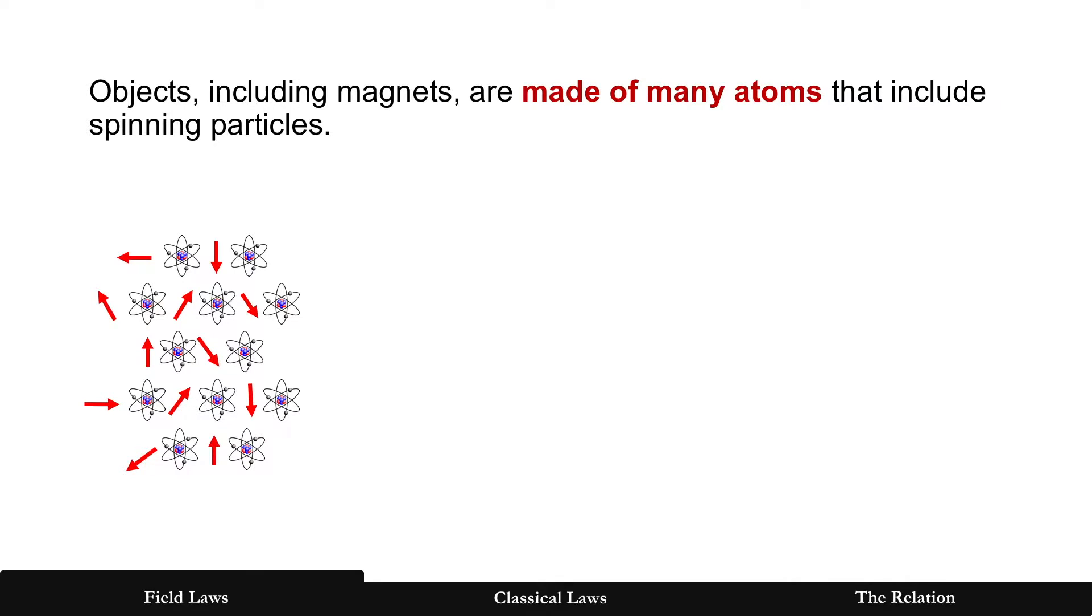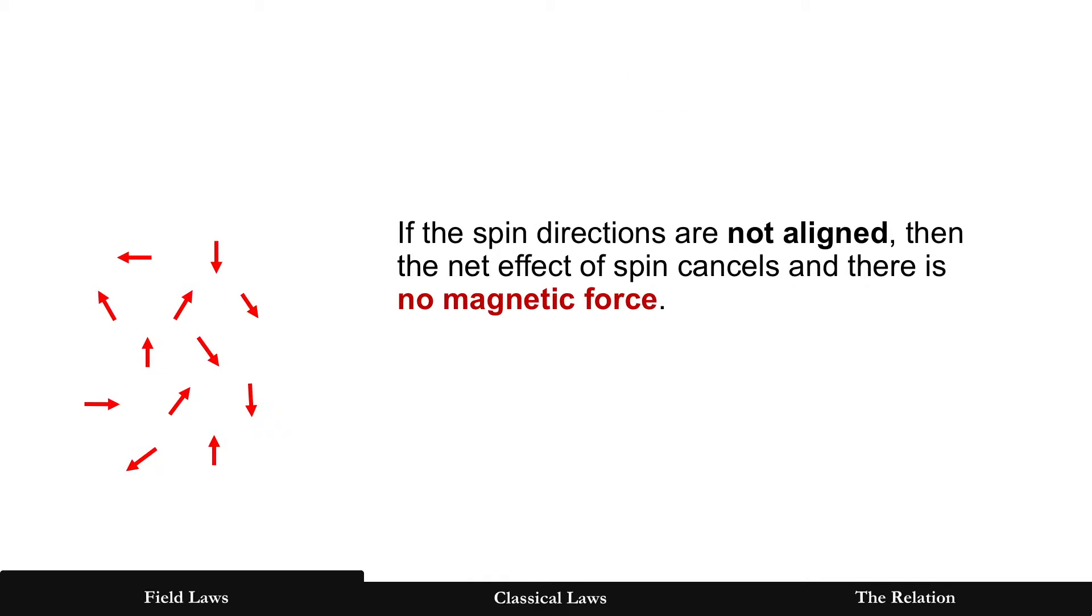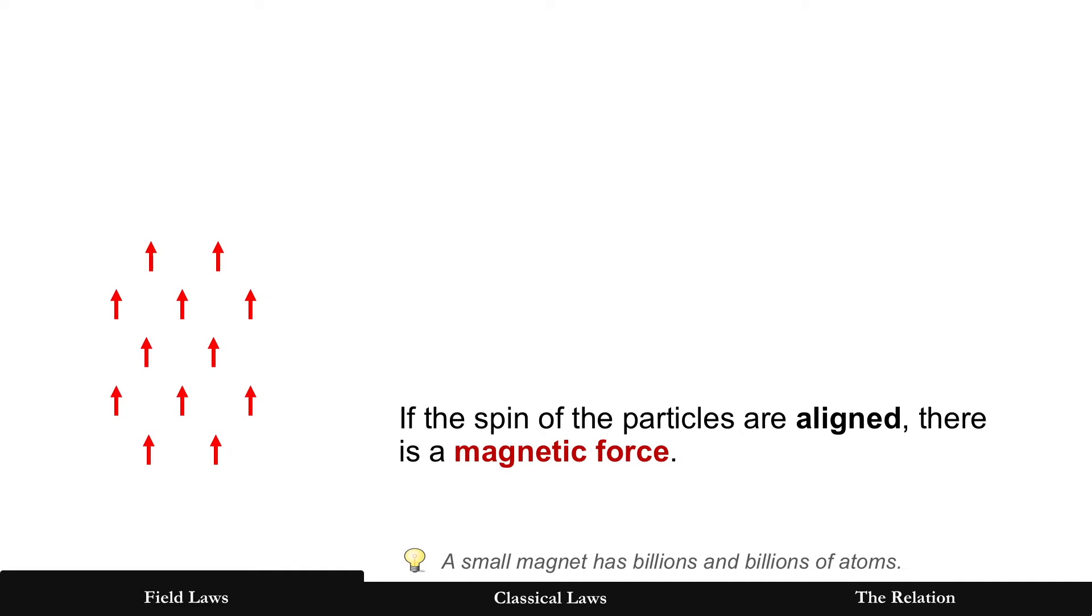But if you just look at that magnetism of the atom, there might be pointed in many different directions and they'll cancel for no magnetic force. But when the spin of particles are aligned, there is a magnetic force and a small magnet has billions and billions of these atoms.